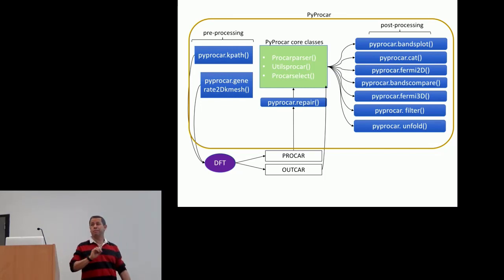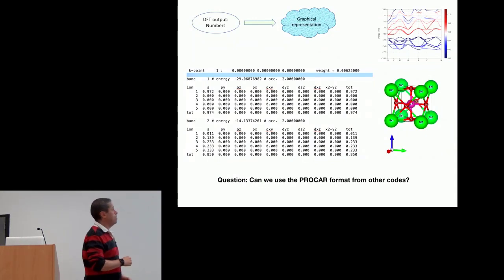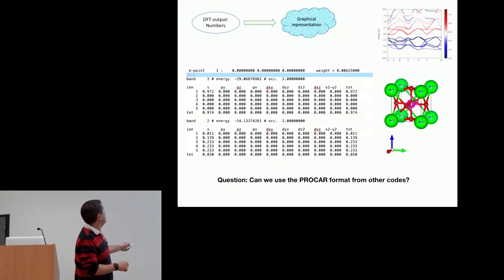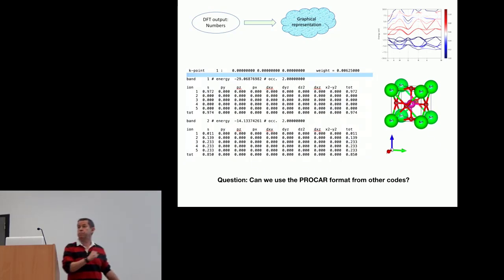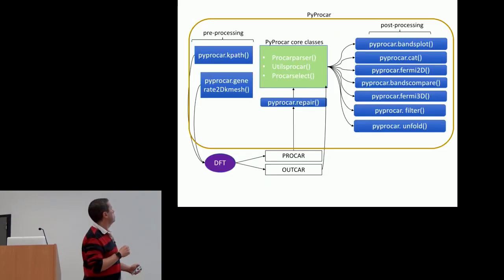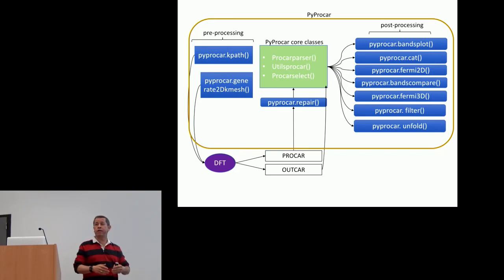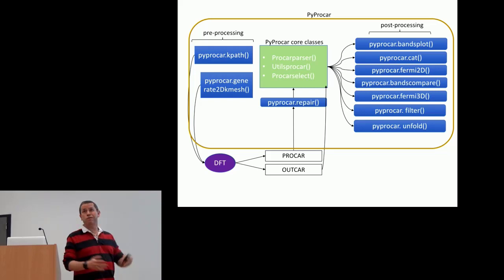In the case of PROCAR, there is a bug — every time there is a new release in VASP, the format has an error. Therefore, we have to create a repair. Every time you read the PROCAR from VASP, you have to pass it through that repair in order to use this. The PROCAR is a file that reports the band structure: it has the k-point, the weight, the energy, the occupation, and also the atomic projections of that specific k-point and band.